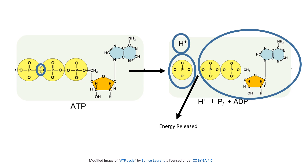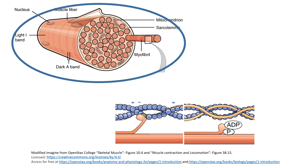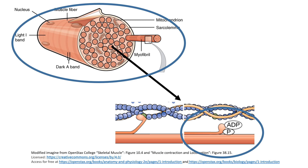This energy can be used for mechanical work. An example of mechanical work is within muscle fibers. Inside of muscle fibers, there are what are known as myosin proteins. When ATP is broken down to ADP and energy is released, these myosin proteins can harness that energy in order to perform mechanical work, which is what allows muscle fibers to contract.